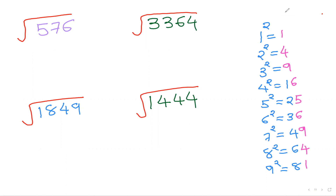So we need to know the squares from 1 to 9: 1² = 1, 2² = 4, 3² = 9, 4² = 16, 5² = 25, 6² = 36, 7² = 49, 8² = 64, 9² = 81.